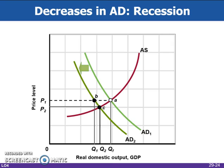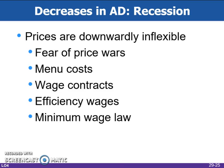If the price level were flexible downward, the decline in aggregate demand would move the economy from A to C instead of from A to B. If aggregate demand decreases, recession and cyclical unemployment may result because prices don't fall easily.